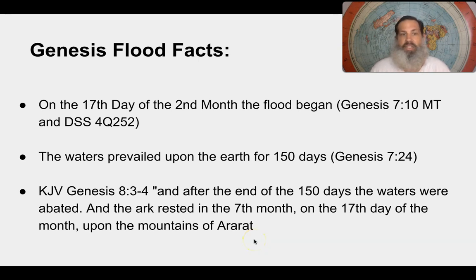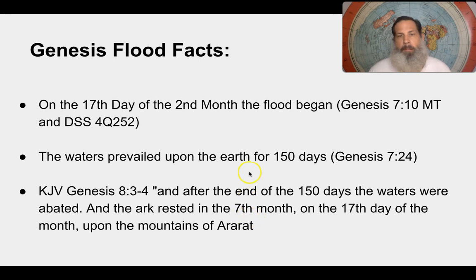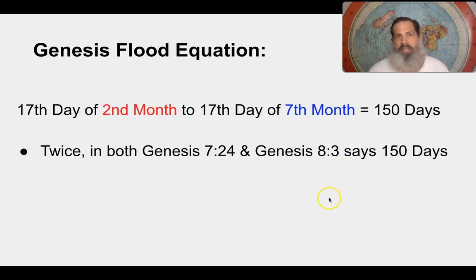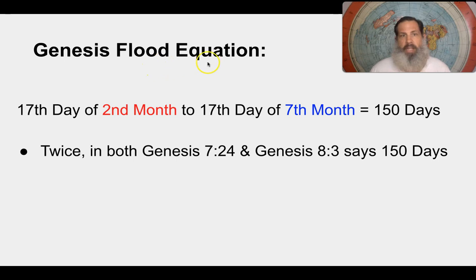In the LXX, it says the 27th day of the second month to the 27th day of the seventh month. In the Masoretic text and Dead Sea Scrolls, it's the 17th day of the second month to the 17th day of the seventh month. Both the LXX and the Masoretic text agree that the amount of time is 150 days. For this presentation, I'm using the Masoretic text with the Dead Sea Scroll version — 17th of the second month to the 17th of the seventh month equals 150 days, as stated twice. That is the Genesis Flood equation.